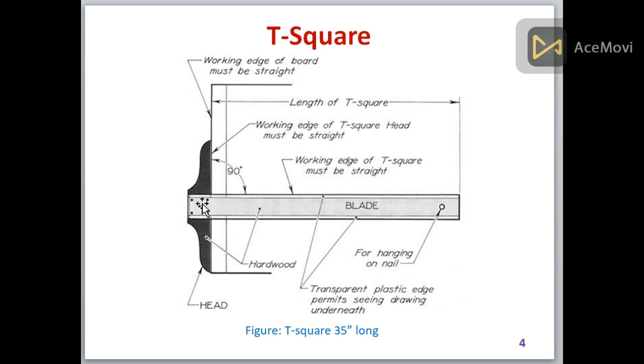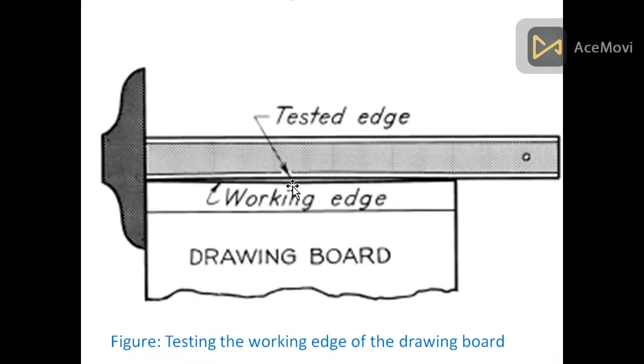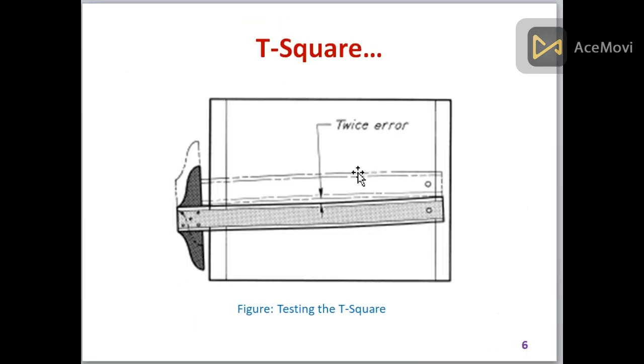This is the working edge of the T-square and this is the drawing board. This is the way we will check the angle of the sheet. Let's have a look here - there is a gap, which means that the sheet is not in its accurate position. So we have to adjust it for accuracy.